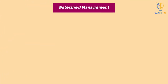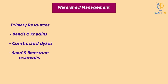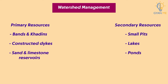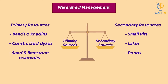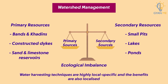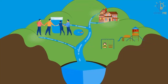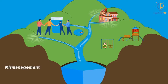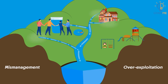Thus, watershed management aims to develop primary sources of land and water which are already with us, or build secondary sources, for use in a manner that will not cause ecological imbalance. Water harvesting techniques are highly local specific and the benefits are also localized. Giving people control over their local water resources ensures that mismanagement and over-exploitation of these resources are reduced or removed.